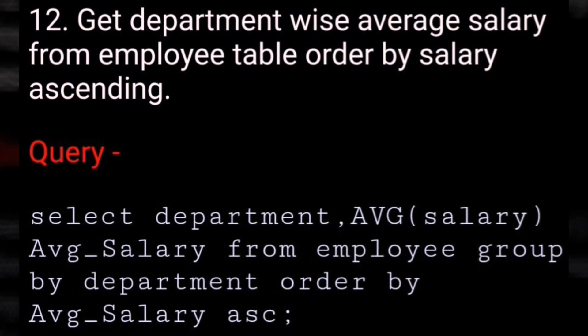Get department-wise average salary from the employee table ordered by salary ascending. SELECT department, AVG(salary) AS average_salary FROM employee GROUP BY department ORDER BY average_salary ASC.